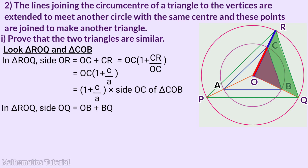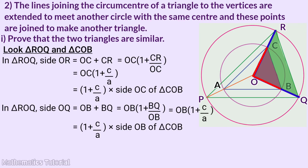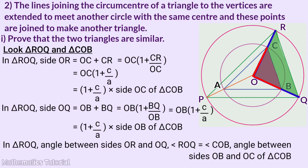Triangle ROQ side OQ equals OB plus BQ. It is equal to OB into 1 plus BQ by OB. BQ is equal to C and OB is equal to A. So this becomes OB into 1 plus C by A.